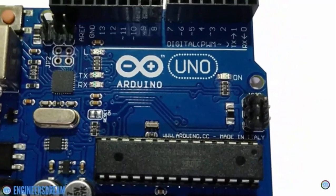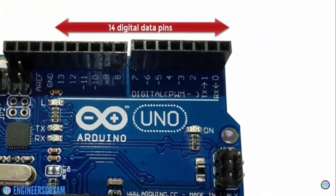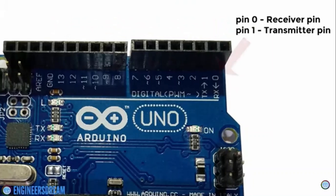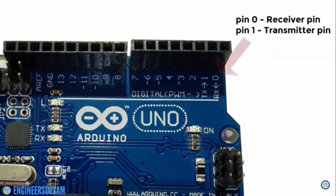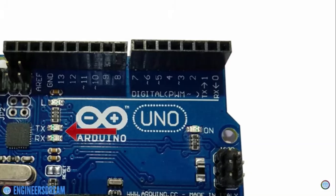The Arduino board consists of 14 digital pins labeled from 0 to 13. Pin number 0 and 1 have RX and TX written on them, which stands for receiver and transmitter, and we can use them for serial communication with a Bluetooth, GSM, or even your computer. The Arduino also consists of transmit and receive LEDs which blink when we upload a program or whenever data is transmitted to the Arduino. The LED labeled L is internally connected to pin number 13, so we can control it by writing data on pin number 13.